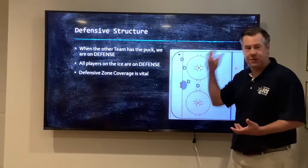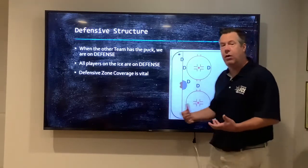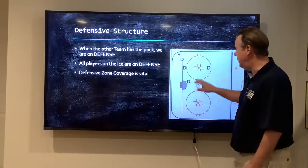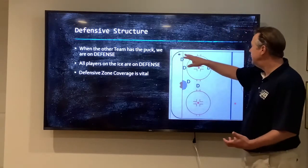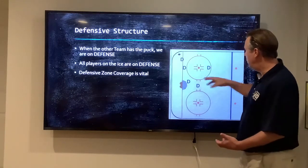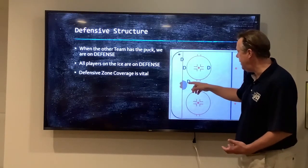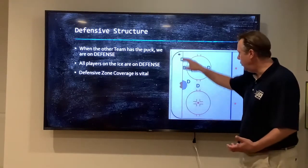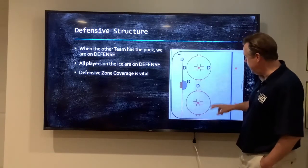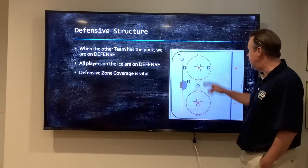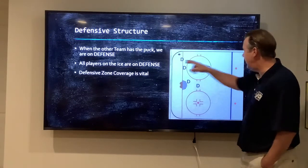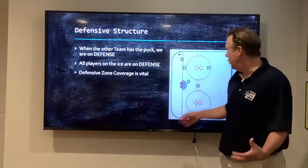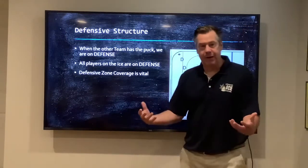You see many NHL teams do this. Some are even more aggressive — they call it a swarm, where the first player doesn't back up, they just go, and the others come even deeper. The concept is the openings are here and here. If the puck is passed behind the net, this player can go and they shift. Everybody stays defending. The open ice way out wide is difficult to pass to, so you're clogging the middle and eventually trying to get the puck back.